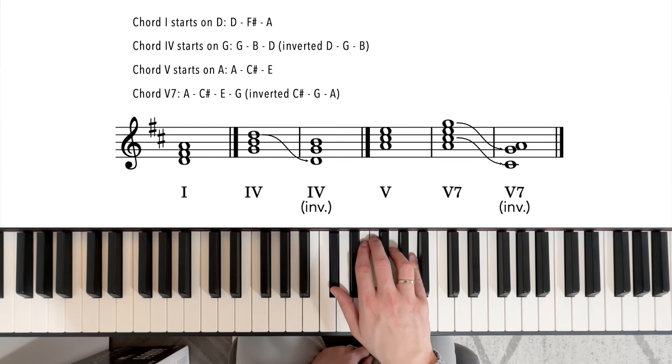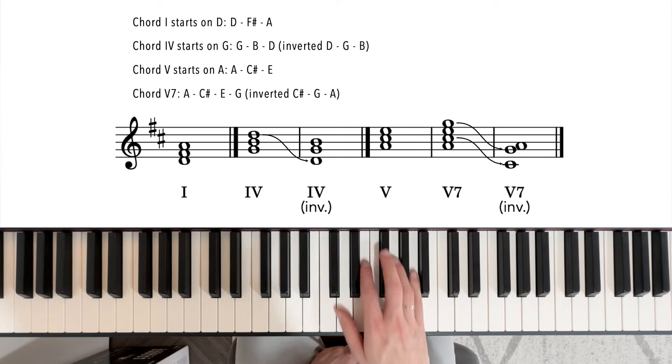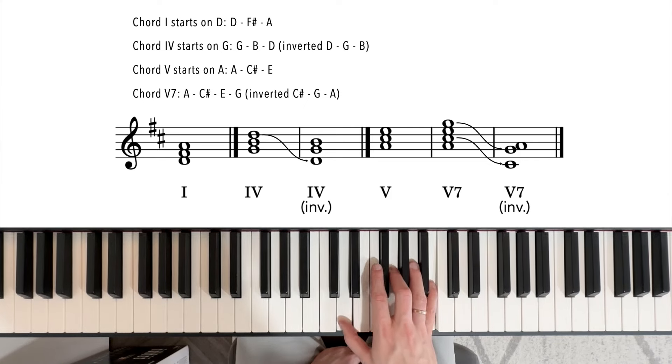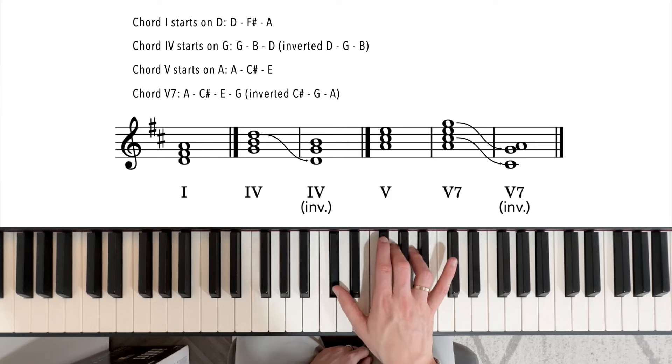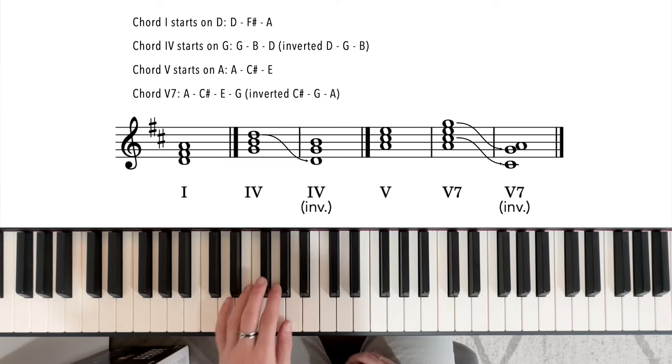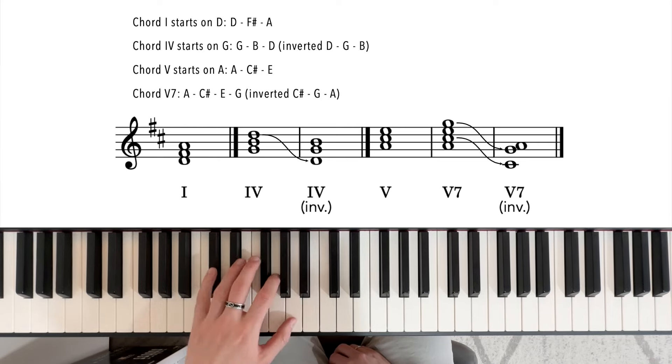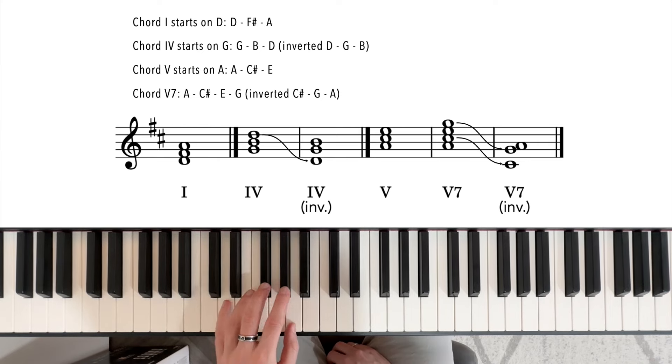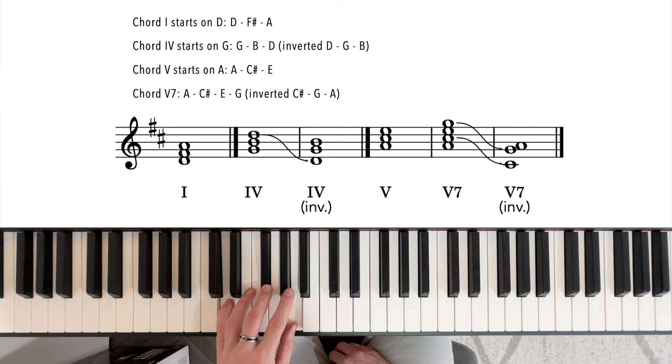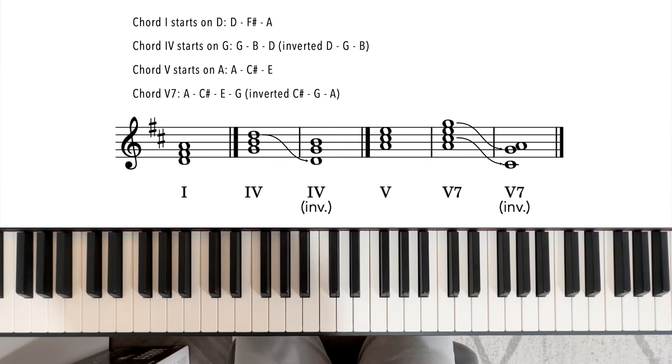Chord one, chord four, chord five seven, and back to chord one. Left hand: chord one, chord four, chord five seven, and chord one. And these are the primary chords and their easiest inversions in the key of D major.